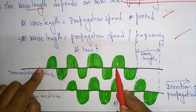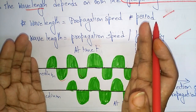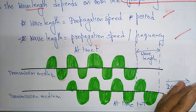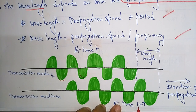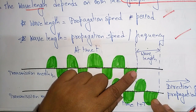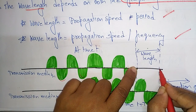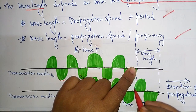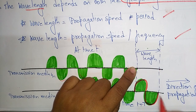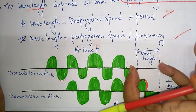At time t, the data is in one position on the transmission media, and after some time — at time t plus T — the data has moved to another position, meaning the waves are passing. The difference between the two positions is the wavelength. This direction of movement is called the direction of propagation.